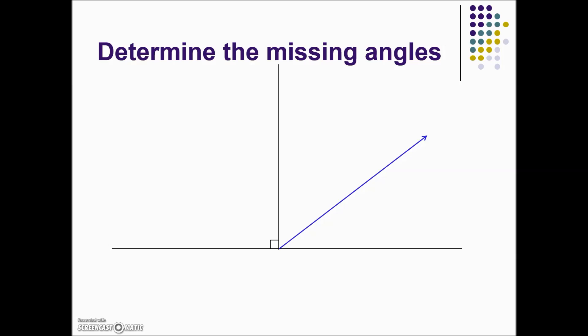Here they're asking us to determine the missing angles. In this diagram we have an acute angle with a measure of 53 degrees. They're asking us to find the measure of this other acute angle and this obtuse angle indicated by the arrows here, angle y. To start off we're going to solve for x.